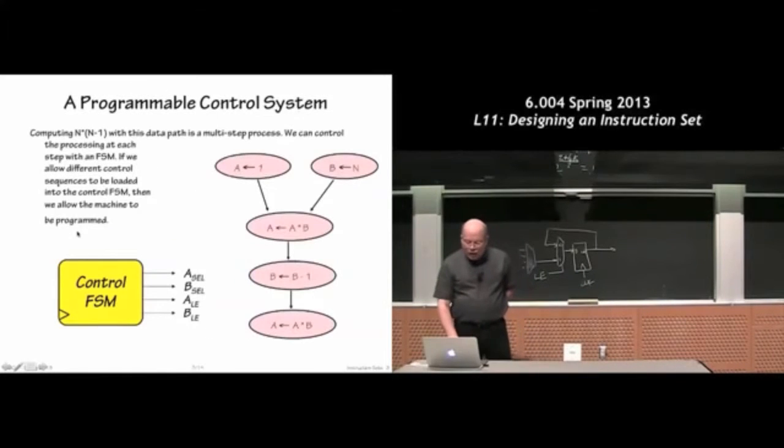So what we'd like to do is use the data path. We're going to start off with a very simple problem of using it to compute N times (N-1), like so. And what we'll do is organize the control signals so that it goes through a sequence of four operations. The first one consists of initializing the two register values. We're going to initialize A to 1 and the B register to the value N.